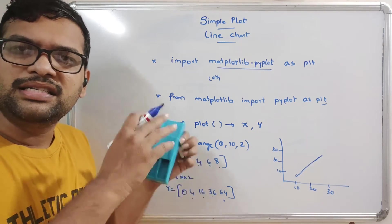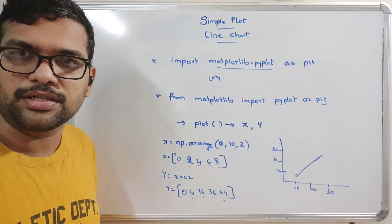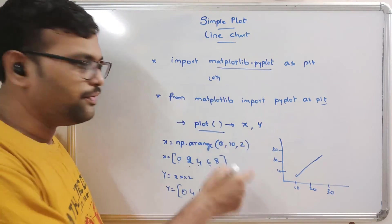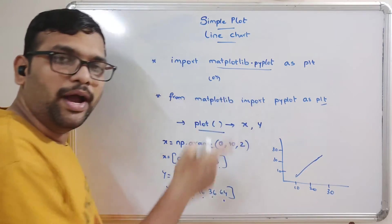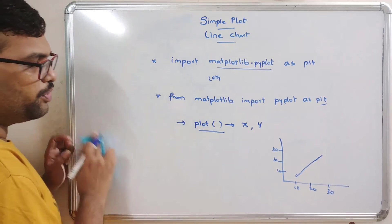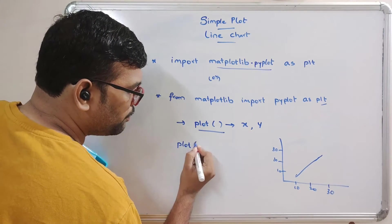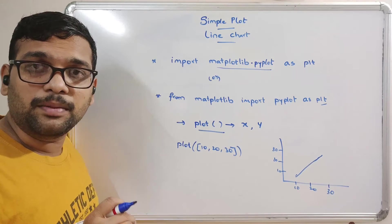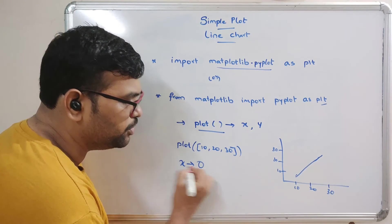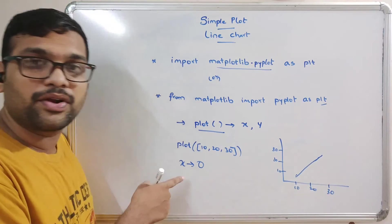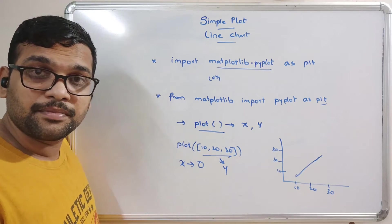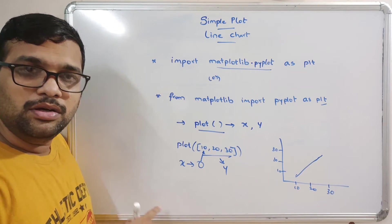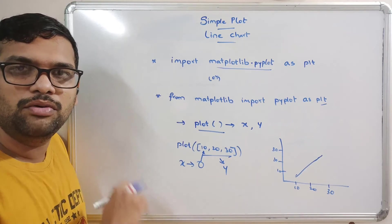There are many ways to give x and y values, and we can also use expressions. The plot function takes x and y parameters. If you give only one value — for example plt.plot([10, 20, 30]) — by default the x-axis will start from zero, and the single list will be treated as the y-axis.